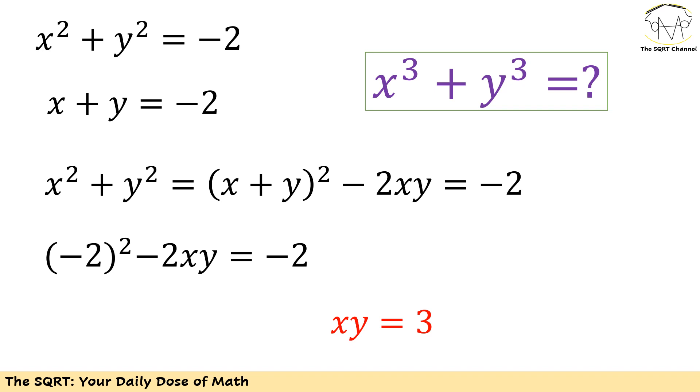We know that x squared plus y squared is negative 2. We also know that power of 2 of x plus y is power of 2 of negative 2. So this means that xy is 3.